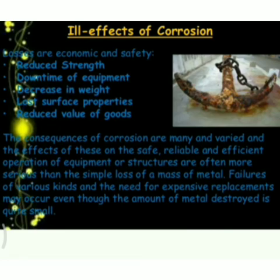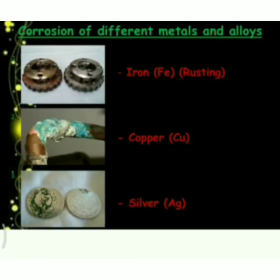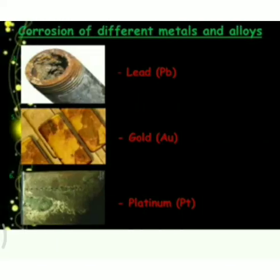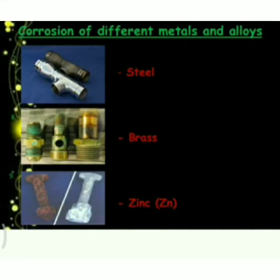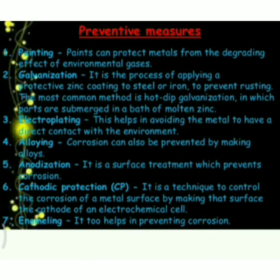Corrosion has different ill effects, one of which is that it can reduce the strength of the metal. Corrosion can happen to different metals and alloys. We have discussed the rusting of iron. In addition, copper, silver, lead, gold, platinum, steel, brass, and zinc are different metals and alloys which are subject to corrosion.